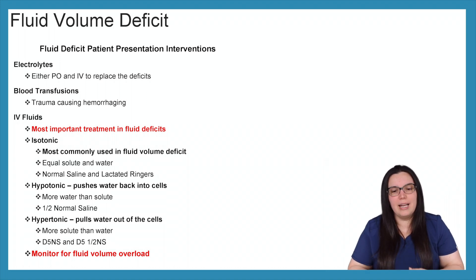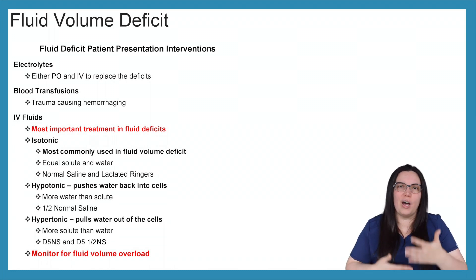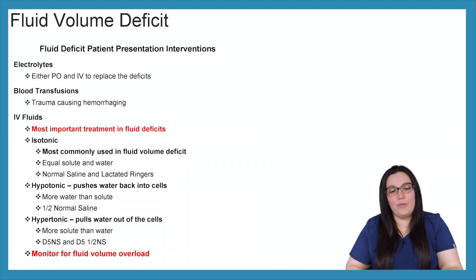Hypertonic solutions pulls water out of the cell into that extravascular space. So there's more solutes than water and you see that a lot with our D5 normal salines as well as our D5 half normal salines with our diabetic patients that may have been on an insulin drip before. And we also want to monitor for fluid volume overload. If you haven't watched my previous video on fluid volume overload, I highly recommend you go back and watch it because we go over how to monitor for what's happening during that fluid volume overload if we are giving IV fluids during fluid deficits.